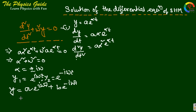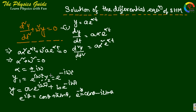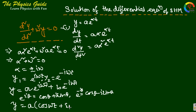We know that e^(iθ) = cosθ + i·sinθ, and e^(-iθ) = cosθ - i·sinθ. Applying this to our solution with θ = ωt, we expand y in terms of cosine and sine.